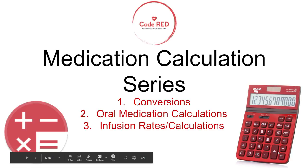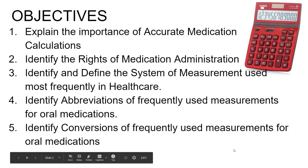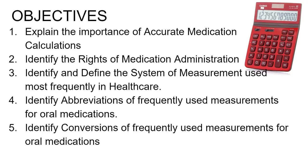Welcome to the Code Red Nurse Mentor medication calculation series. This is a three-part series where we will be discussing conversions, oral medication calculations, and infusion rates. Today we start with conversions, which are very important as a basis for any medication calculation. The objectives for today are to explain the importance of accurate medication calculations, identify the rights of medication administration, identify and define the systems of measurement used most frequently in healthcare, identify abbreviations of frequently used measurements, and identify conversions of frequently used measurements for oral medications.